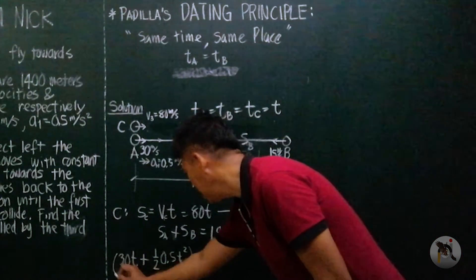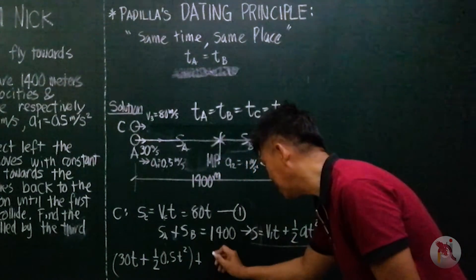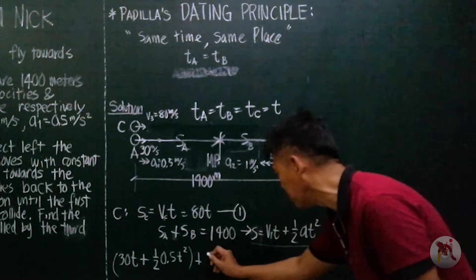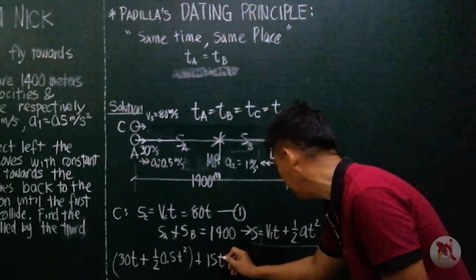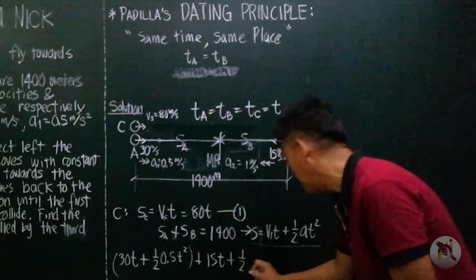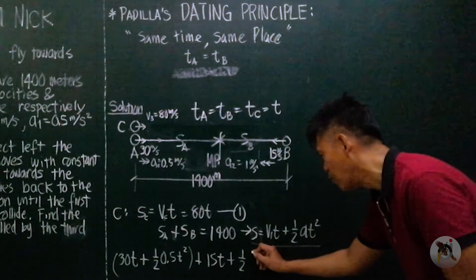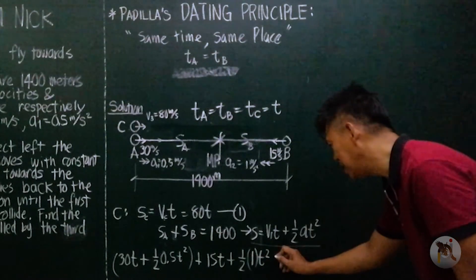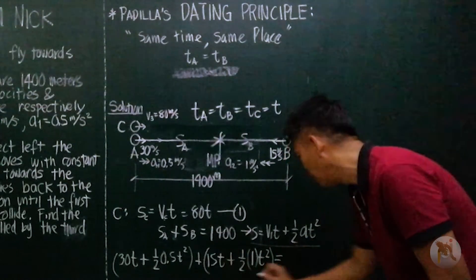While for B, S_B is V_1 T, velocity is 15 times T plus 1/2 acceleration is 1 times T squared must be equal to 1400.